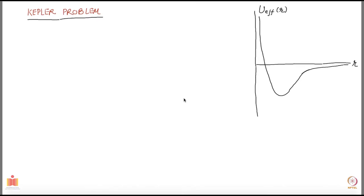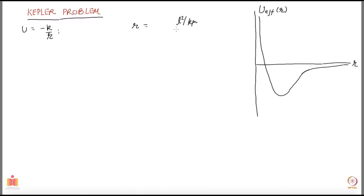Let us summarize what we have done till now. We were looking at the Kepler problem where the potential energy of the system is given by minus k over r. We had reduced the two-body problem and found that r is given by the following relation — conic sections — with L squared over k·mu in the denominator, then 1 over 1 plus epsilon cos of theta.